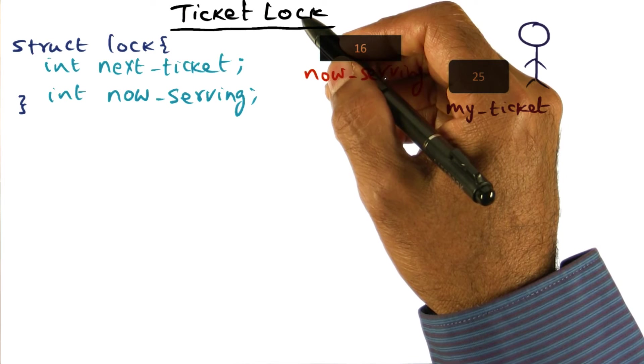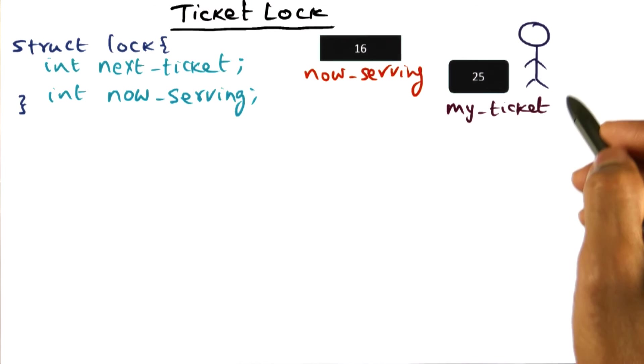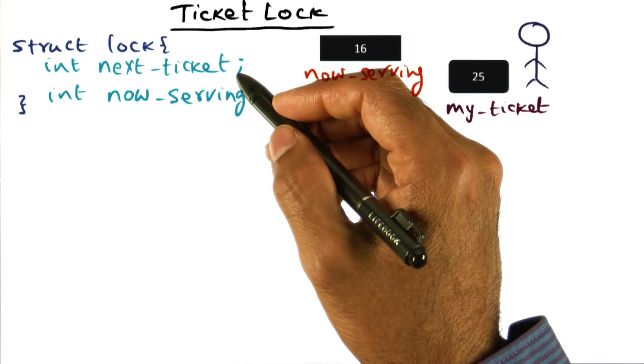The ticket lock algorithm is basically implementing what I described to you as to what happens in a deli shop. The lock data structure has two fields to it, a next ticket field and a now serving field.